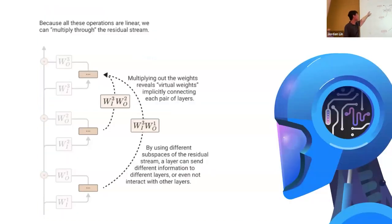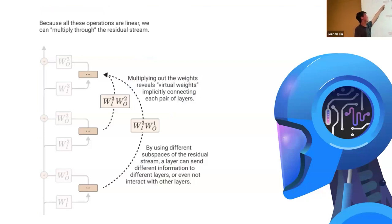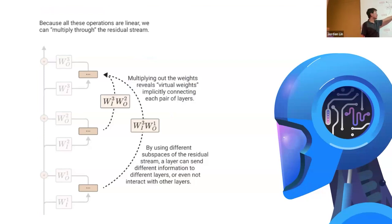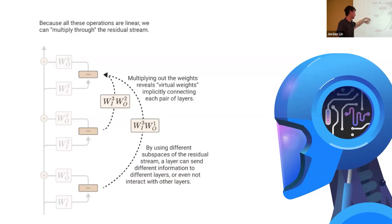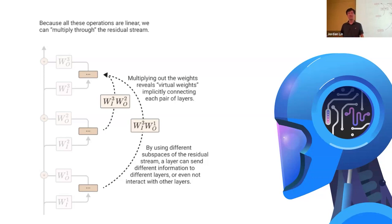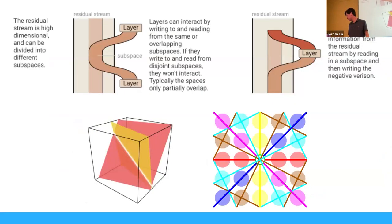We can think of each data science team as having access to data from all prior teams, because every layer can read from what prior layers wrote into the residual stream. Layer 3 can access data from layer 1 because the data written by layer 1 is still in the residual stream. So effectively there are implicit connections between different layers — each layer is connected to all prior layers. Layers can interact by writing to and reading from the same or overlapping subspaces, and they can also delete information by writing the negative of what's already there.